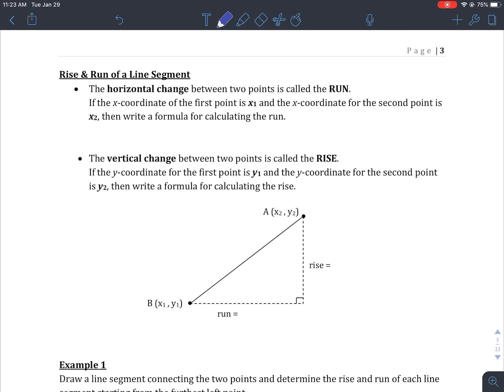Now once I have a line, we can really read the rise and the run of that line. Now what that's going to allow us to do is calculate what's called the slope of that line. So the horizontal change between two points is called the run. So I can only go left to right, I can't run up or down, because that doesn't make sense. So if the x-coordinate of the first point, we're going to call that x1, and the x-coordinate of the second point, we're going to call it x2. And we can write a formula for calculating the run. Basically, it's just the difference between those two points. So we're going to say it's x2 minus x1.